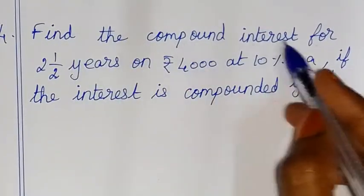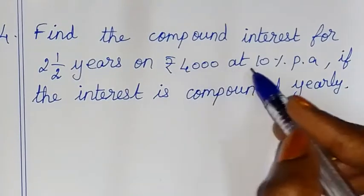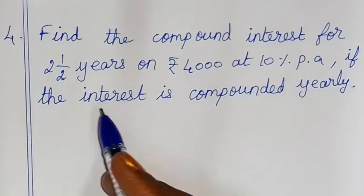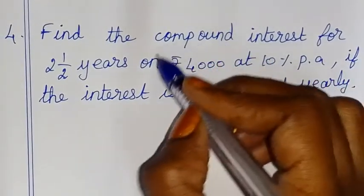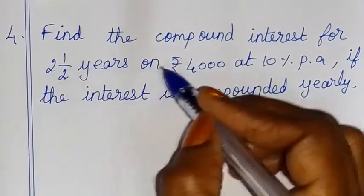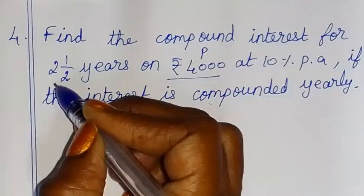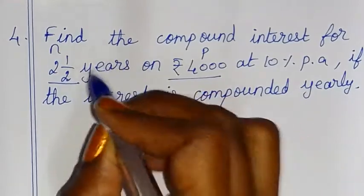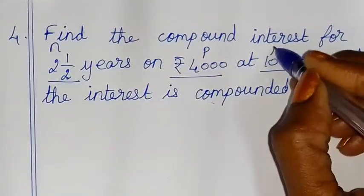Now the next problem: Find the compound interest for 2.5 years on Rs.4000 at 10% per annum, if the interest is compounded yearly. This is the principal value Rs.4000. The number of years is a mixed fraction 2.5.